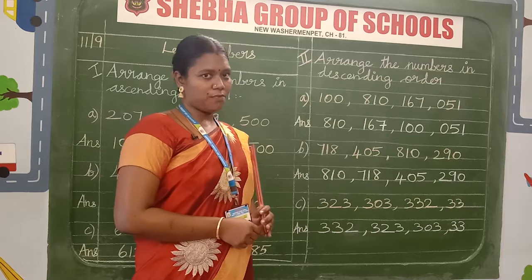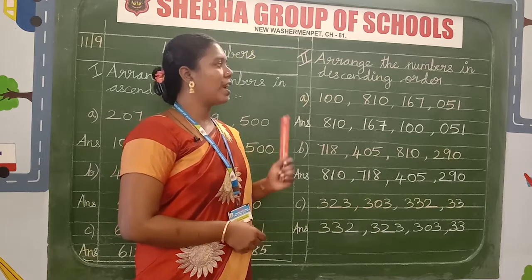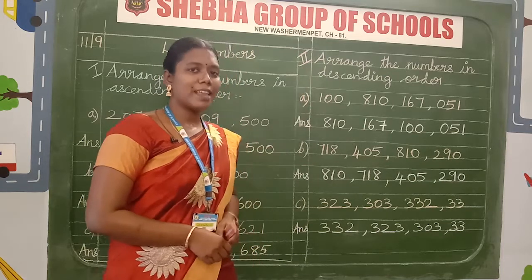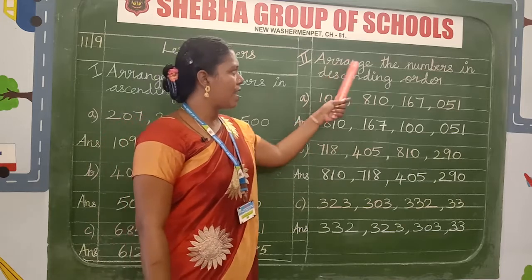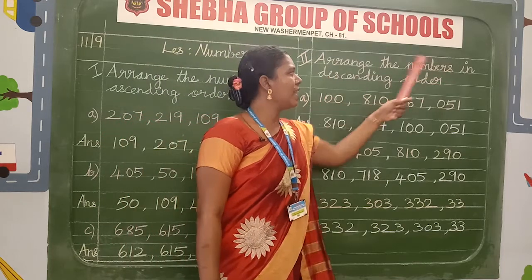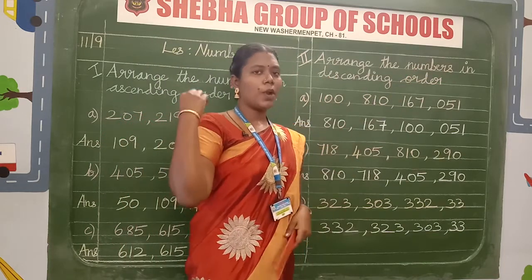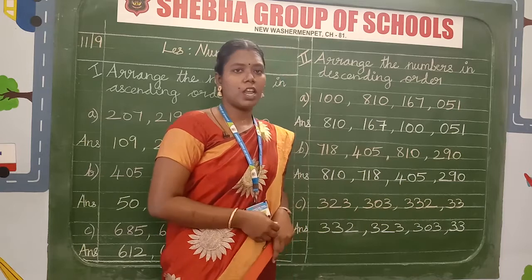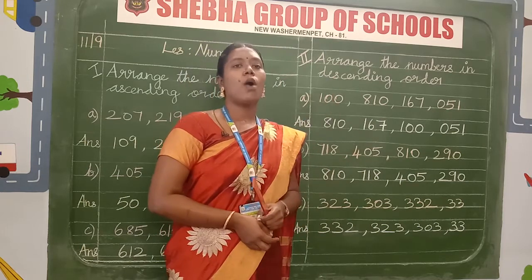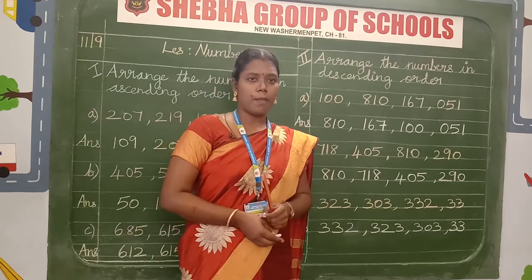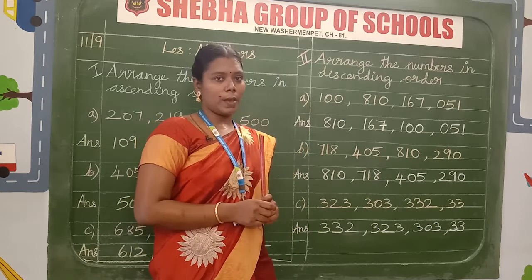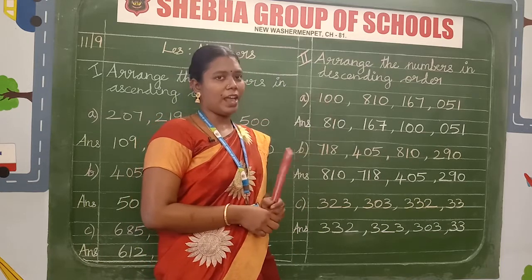After finishing the first Roman numeral, take a fresh page for the second Roman numeral. What do you write for the second Roman numeral? Arrange the numbers in descending order. The first Roman numeral was ascending order, so the second Roman numeral is descending order. What is descending order? Write bigger number to smaller number — that is the method of descending order.